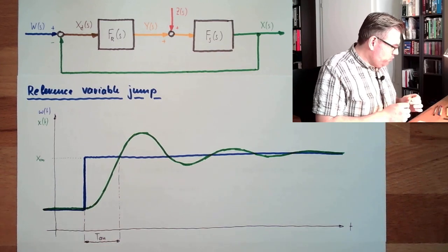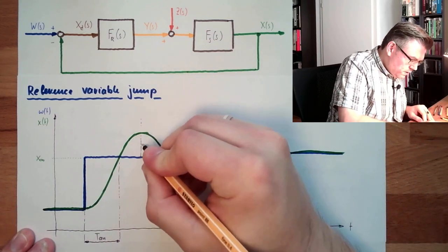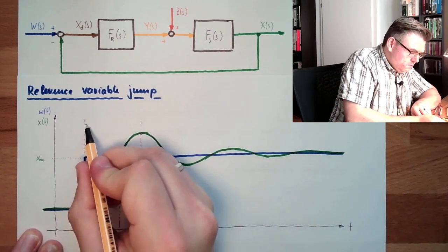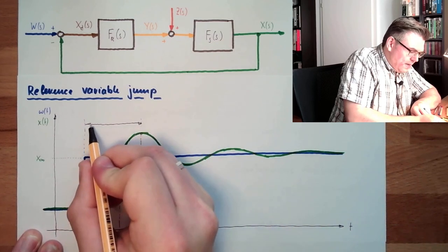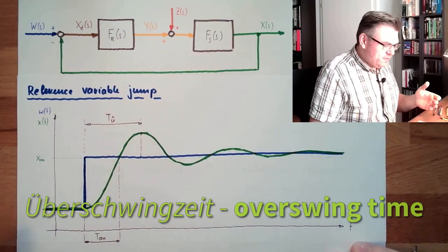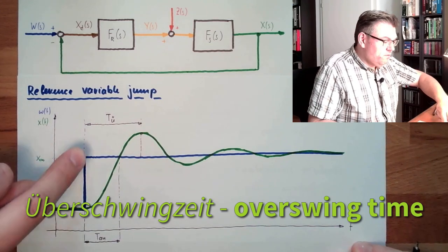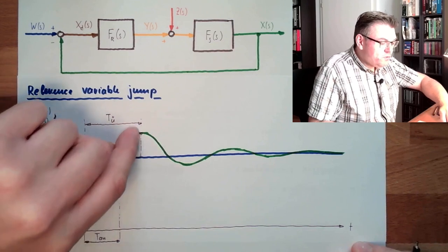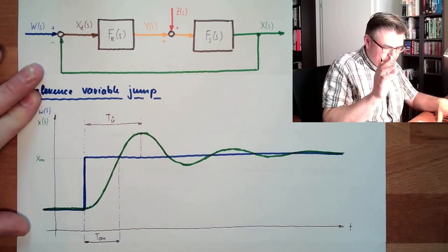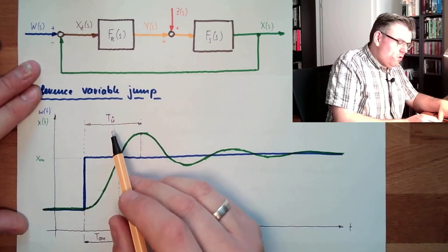Then we do have the time to the first overswing here. Here is our first maximum. This time here, call it TÜ for Überschwingzeit. It's the overswing time in English. This is the time from the start of the action, reference variable jump, to the first maximum, which is usually the highest, or it's not stable then. But let's assume we have something stable. Überschwingzeit, overswing time.